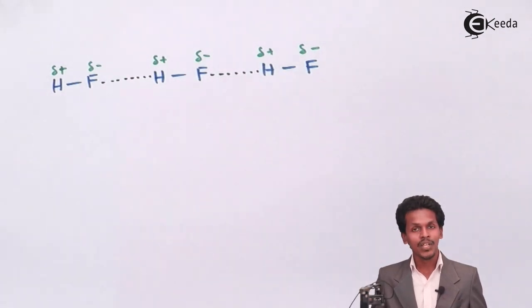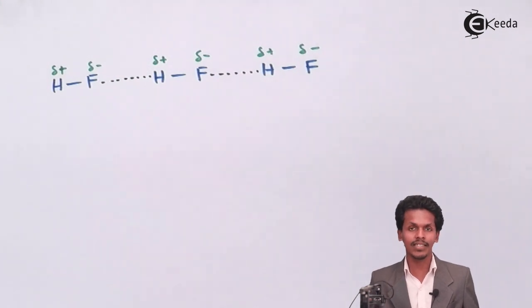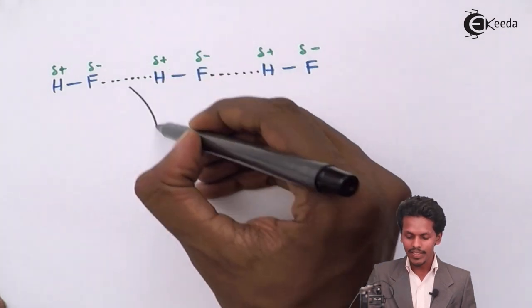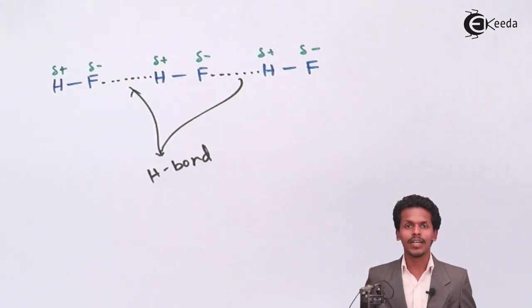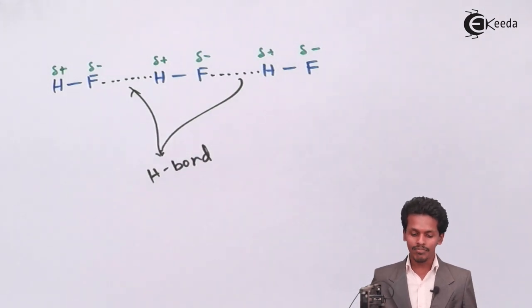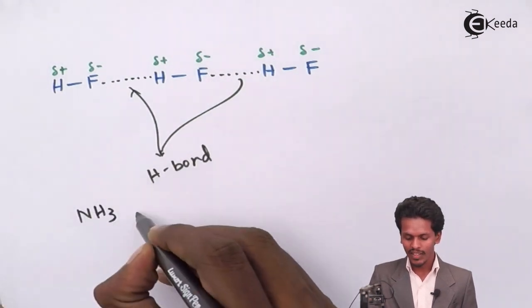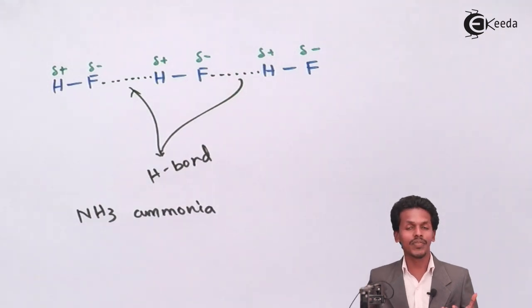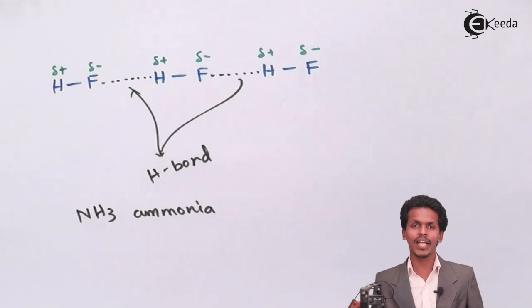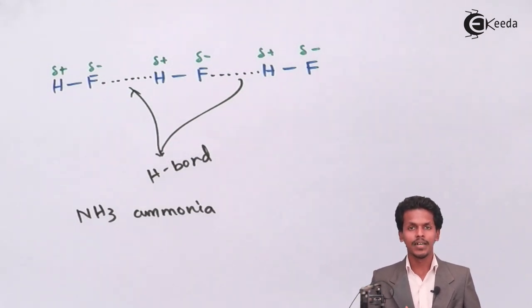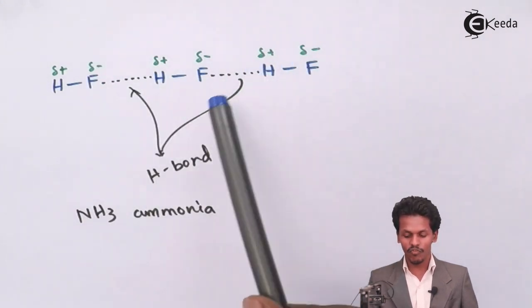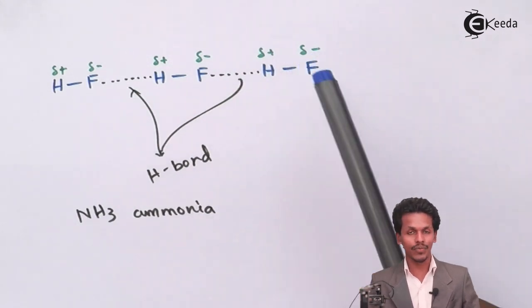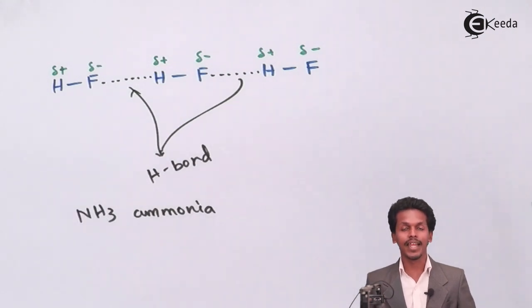The fluorine of one HF molecule will also try to bond with the hydrogen of another HF molecule. This dipole-dipole interaction occurs because hydrogen is partially positive and fluorine is partially negative. Because of this interaction, two molecules form a hydrogen bond, which gives rise to a specific and appreciable boiling point. So HF and similarly ammonia also form hydrogen bonds with each other or with other molecules.